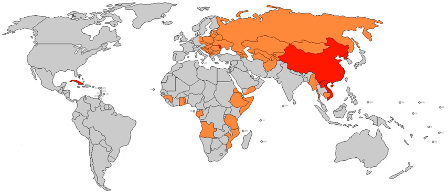A socialist economic system that features social ownership but is based on the process of capital accumulation and utilization of capital markets for the allocation of capital goods between socially owned enterprises falls under the subcategory of market socialism.